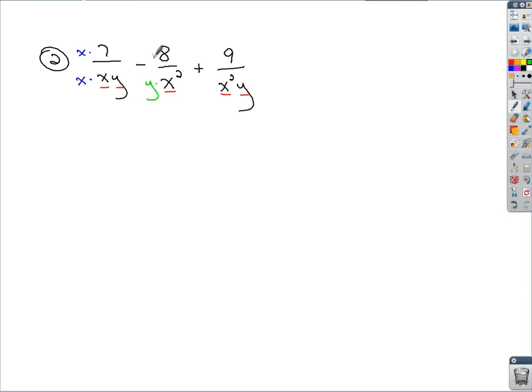I multiply y to the bottom, multiply y to the top as well. What I should be able to do is now create one big fraction over here where my least common denominator is going to be x squared y.